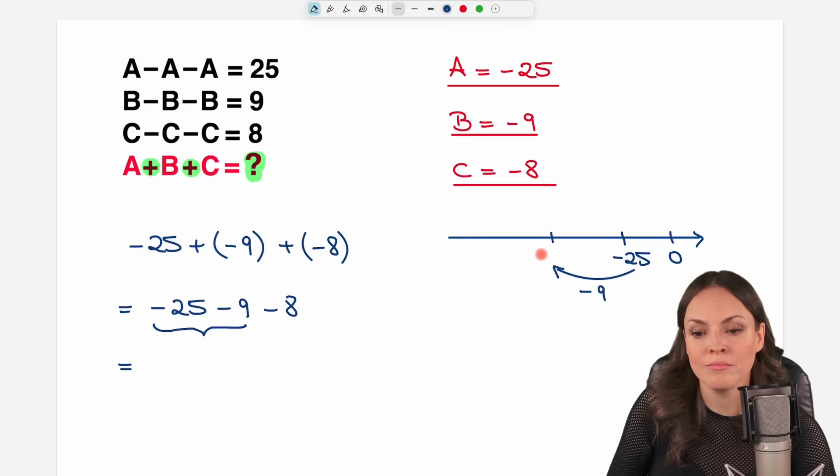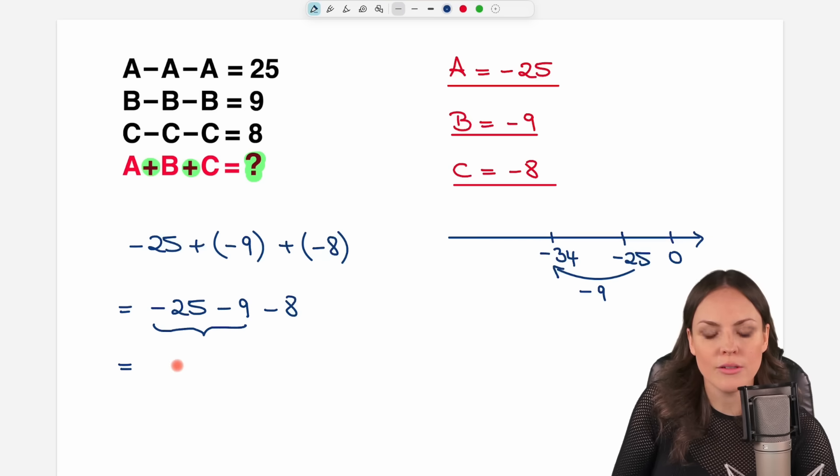If we want to subtract 9, so we're going to be in the negative area here. Negative 25 minus 9 more steps is going to be negative 34. So these two together are negative 34.